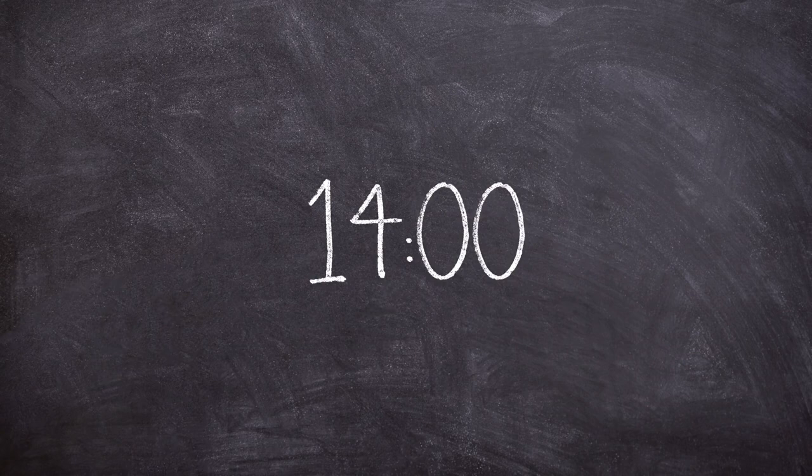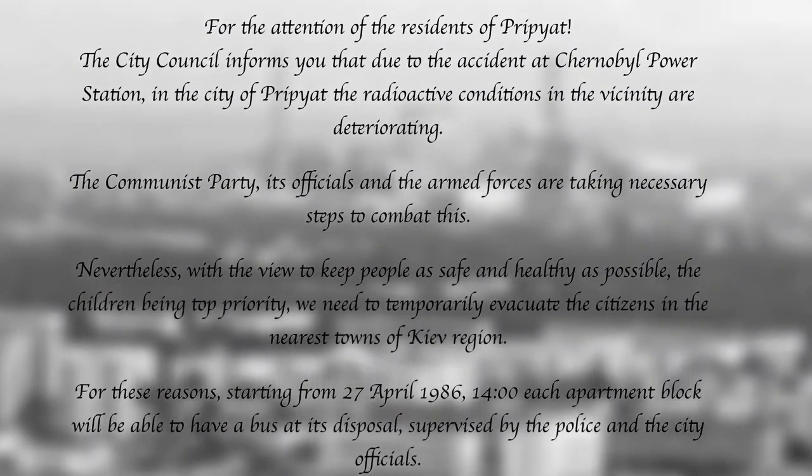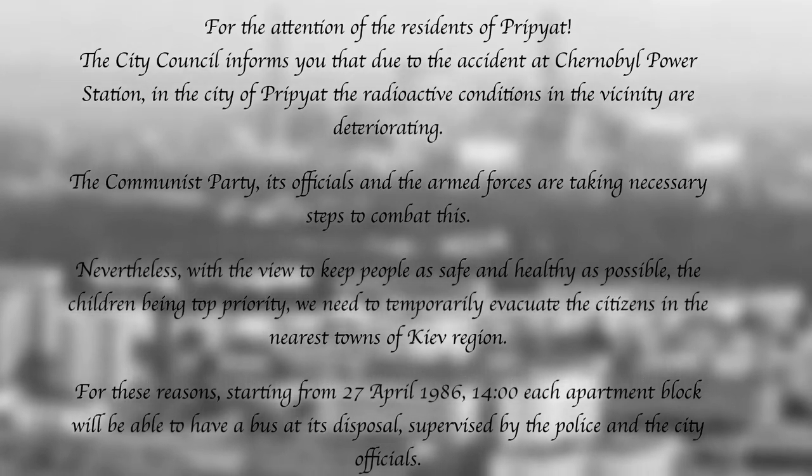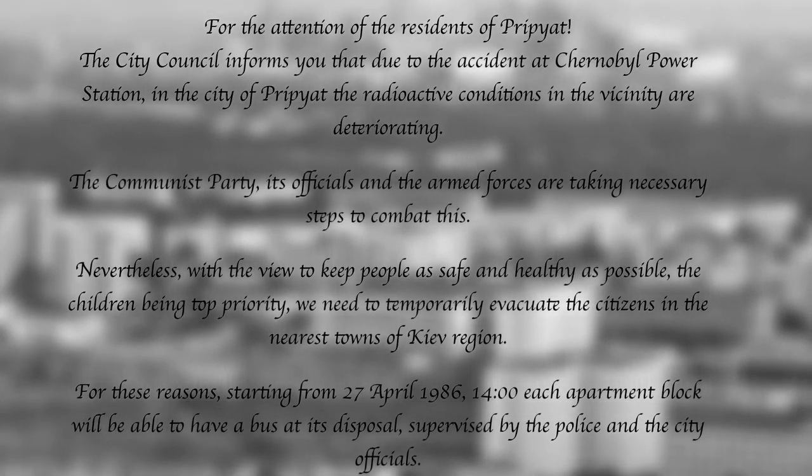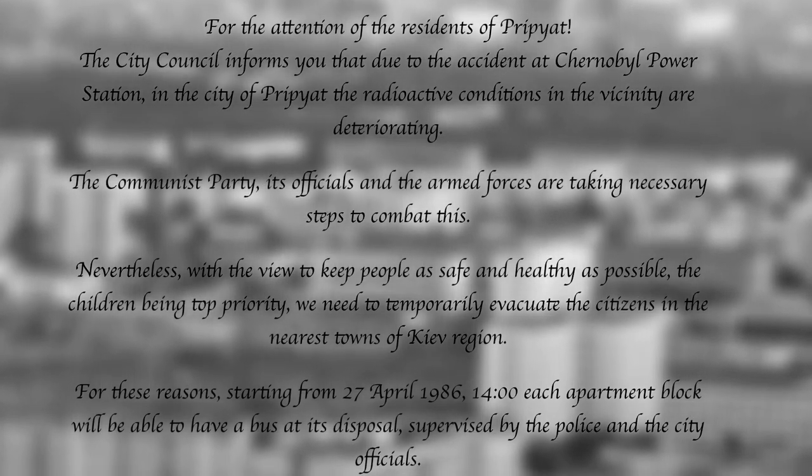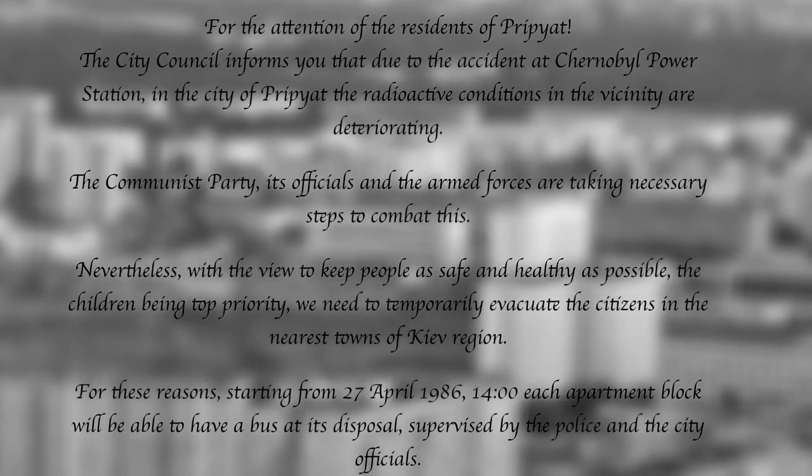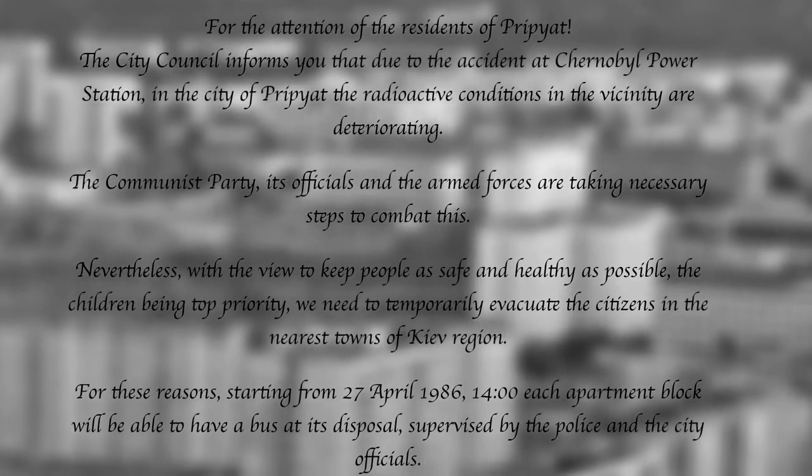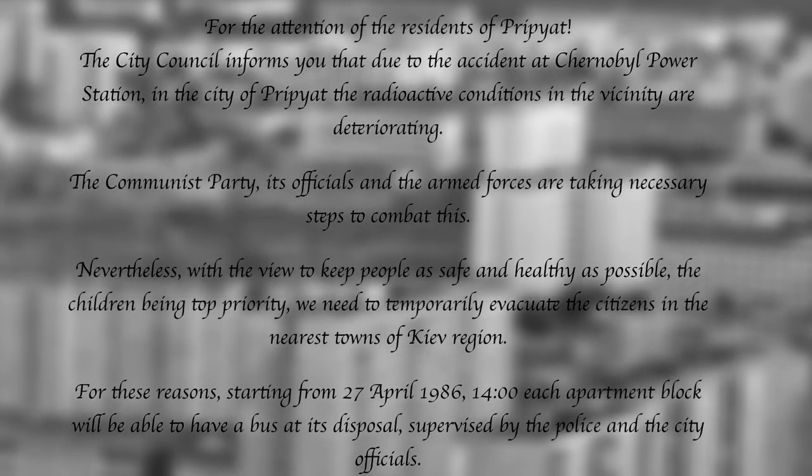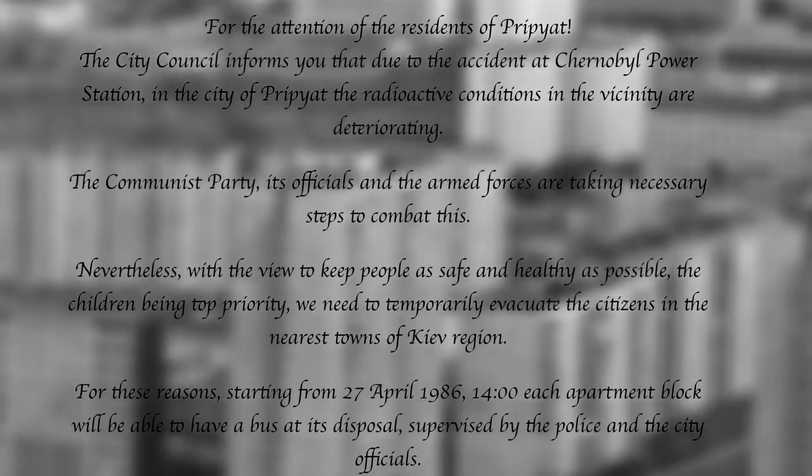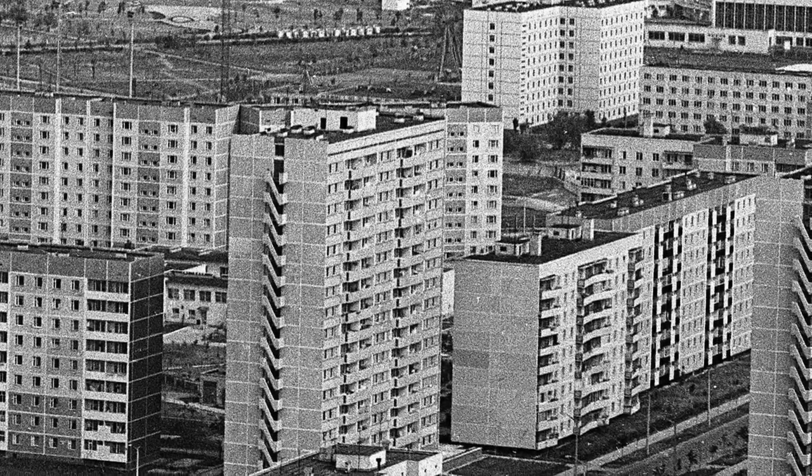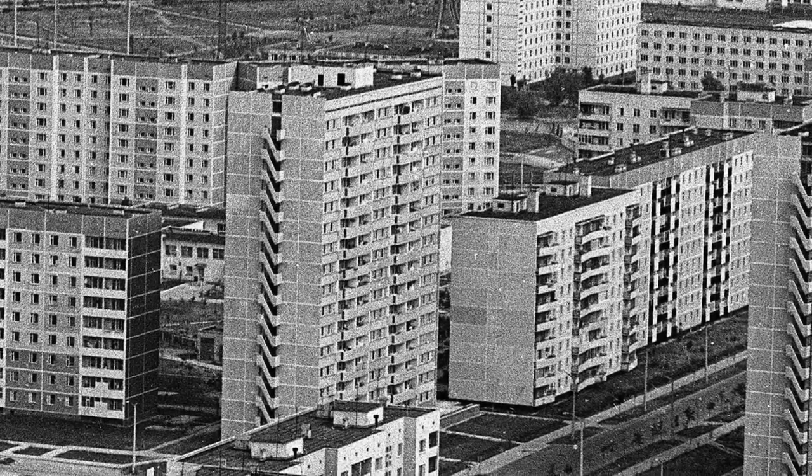At 2 PM on the 26th of April, an announcement that you would never want to hear was broadcast in the city of Pripyat. "For the attention of the residents of Pripyat, the city council informs you that due to the accident at the Chernobyl power station in the city of Pripyat, the radioactive conditions in the vicinity are deteriorating. The Communist Party, its officials and the armed forces are taking necessary steps to combat this. Nevertheless, with the view to keep people safe and as healthy as possible, the children being top priority, we need to temporarily evacuate the citizens in the nearest towns of Kiev region. For those reasons, starting from the 27th of April 1986 at 2 PM, each apartment block will be able to have a bus at its disposal supervised by police and city officials." The first to leave the town was women and children and within 3 hours the city was empty, a ghost town and left to decay.